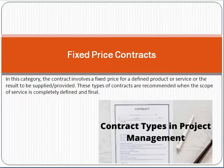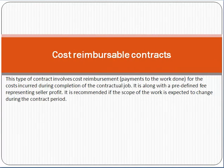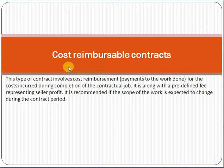Another type is the cost reimbursable contract. This means that whatever you are spending, you will receive that money back plus some additional fee. This fee must be well defined and documented in advance. For example, suppose you are building a flyover in a city — that could be a cost reimbursable contract.